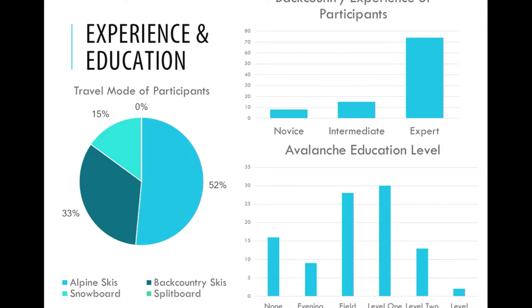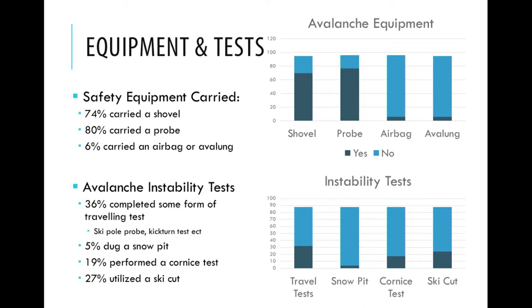In terms of how people are traveling, the biggest chunk is just alpine skis. Saddle Peak, the way it's oriented, you don't actually have to skin — you can take the lift, ski down, throw your skis on your shoulder and hike up. You don't necessarily need specialized backcountry gear to access it. We have 33% backcountry skis and 15% snowboarders, and zero split boarders all year — which makes sense because you don't need a split board to access the terrain.